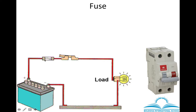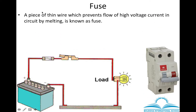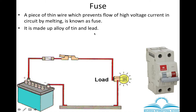In this way, the fuse protects electric devices from high voltage current. The fuse is a piece of thin wire that prevents the flow of high voltage current in the circuit by melting. This wire is not made of pure metal — it is made of an alloy of tin and lead, and it is always connected in the live wire or phase wire of the circuit.